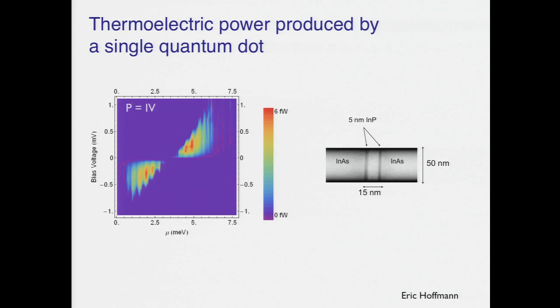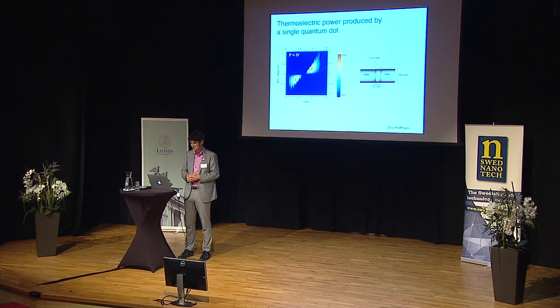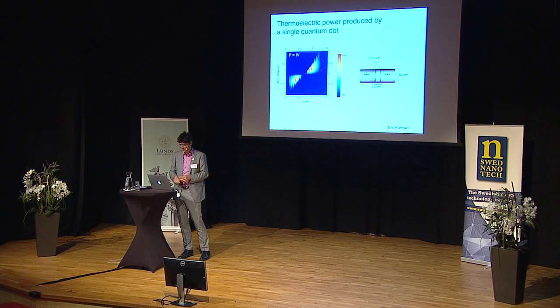By then using more or less heat you can get different amounts of current out of that. We understand that very well. We have even been able to measure the power output from a single nanowire or a single quantum dot. One single quantum dot produces about a femtowatt — that's a number to take home. The energy consumption of the Earth is numbered by terawatts, so there are some orders of magnitude in between. But quantum dots are small, so there's hope.